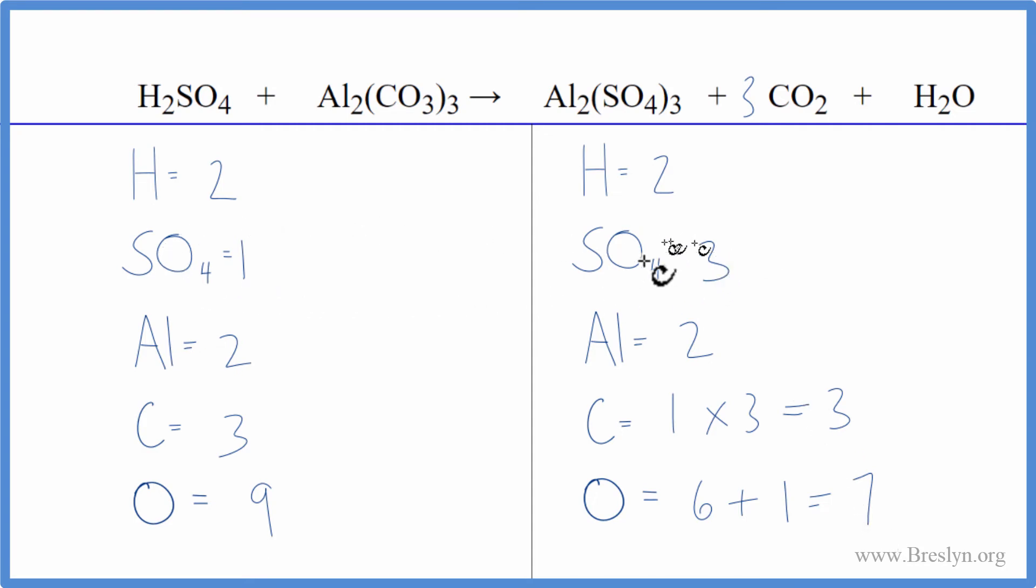Next, let's fix the sulfates. I like to leave oxygen till last. So I have three sulfates here and one here. I'll put a three. It's my coefficient in front of the H2SO4, the sulfuric acid. One sulfate times three gives me three of those. So these are balanced.